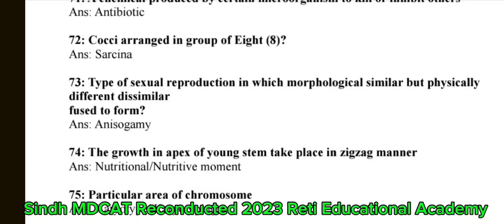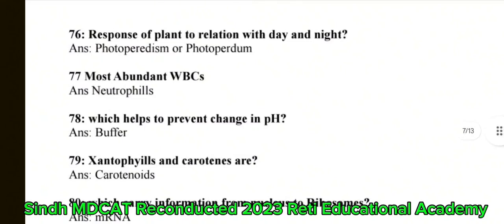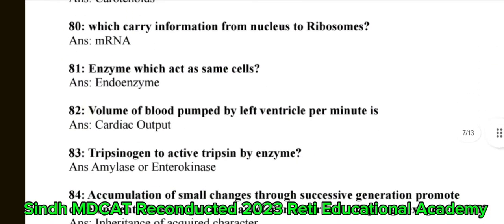Question 75: Particular area of a chromosome — the correct answer is karyotyping. Question 76: Response of a plant in relation to day and night — the correct answer is photoperiodism. Question 77: Most abundant white blood cells — the correct answer is neutrophils. Question 78: Which helps to prevent change in pH — the correct answer is buffer. Question 79: Xanthophylls, xanthophils and carotene — the correct answer is carotenoids. Question 80: Which carries information from nucleus to ribosomes — the correct answer is mRNA.